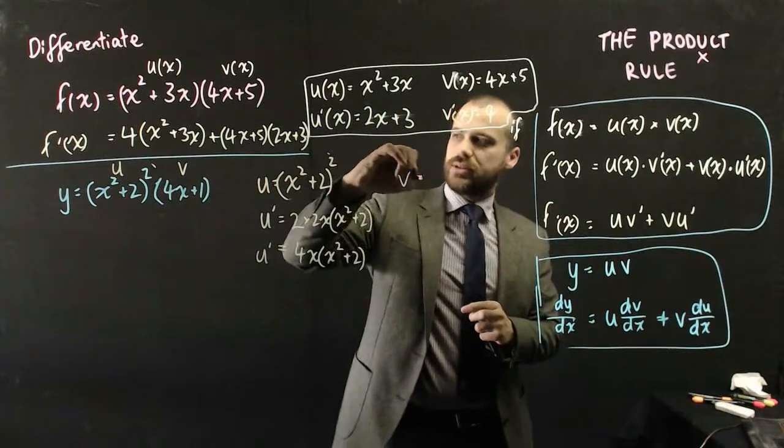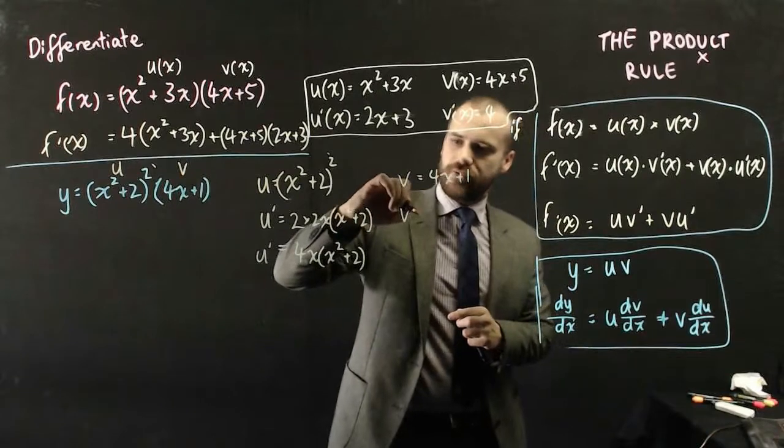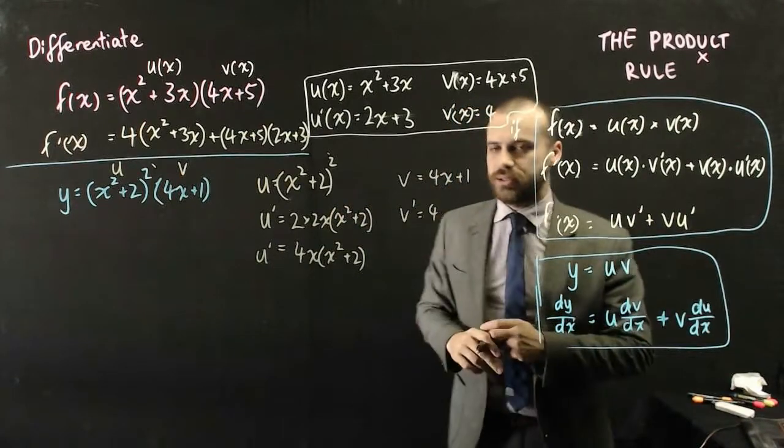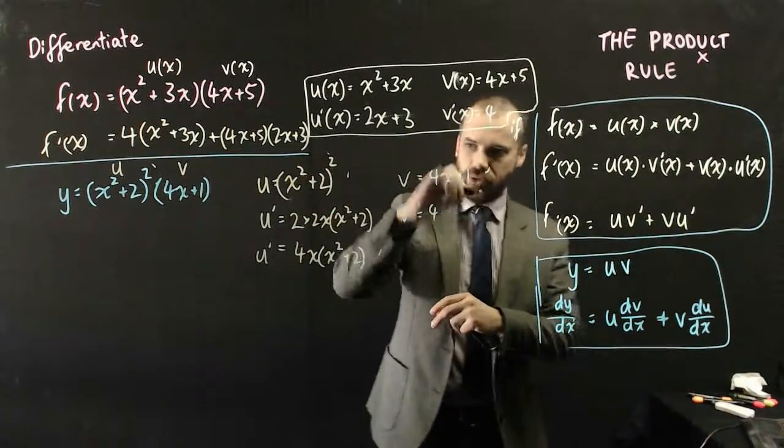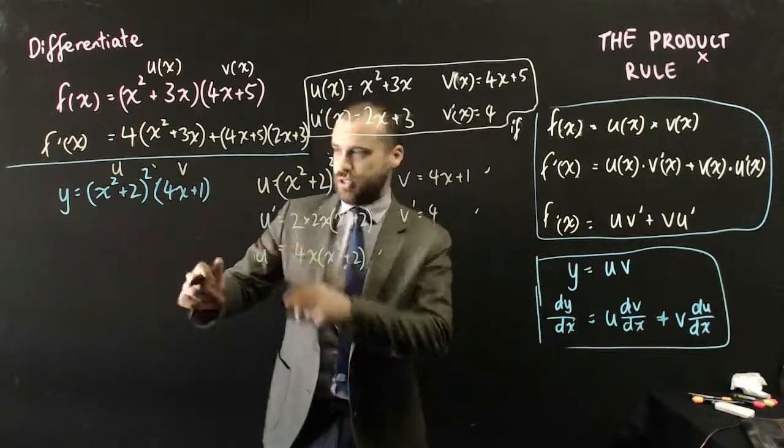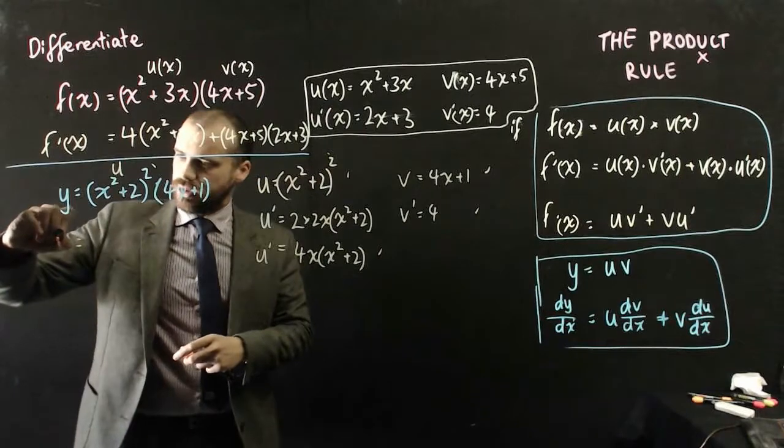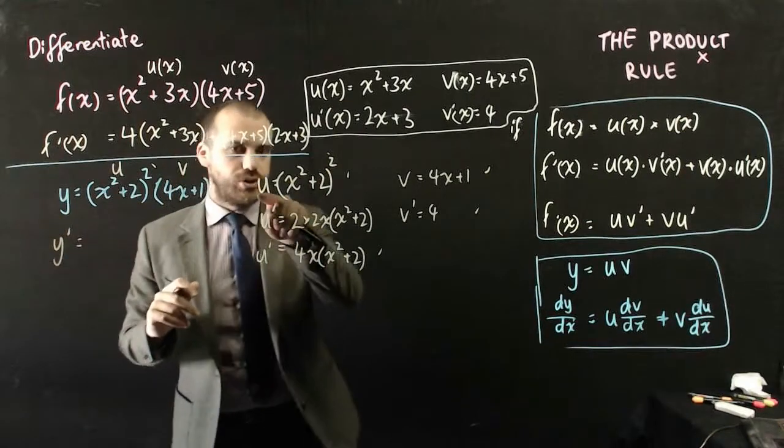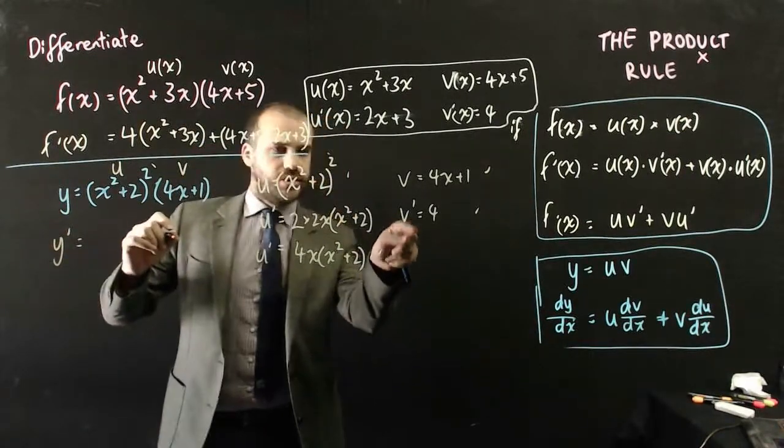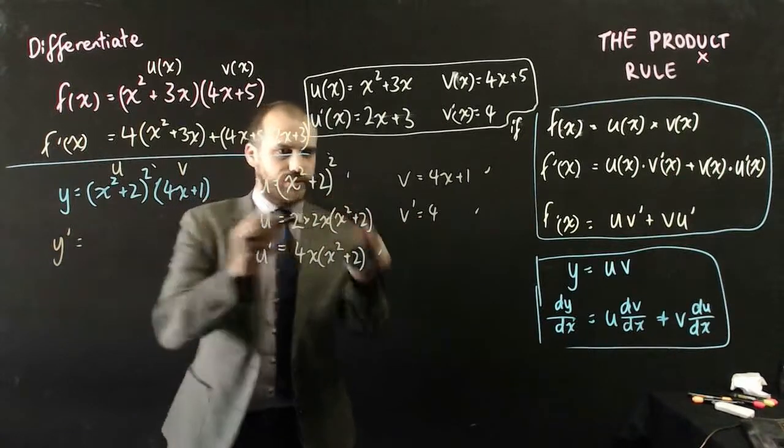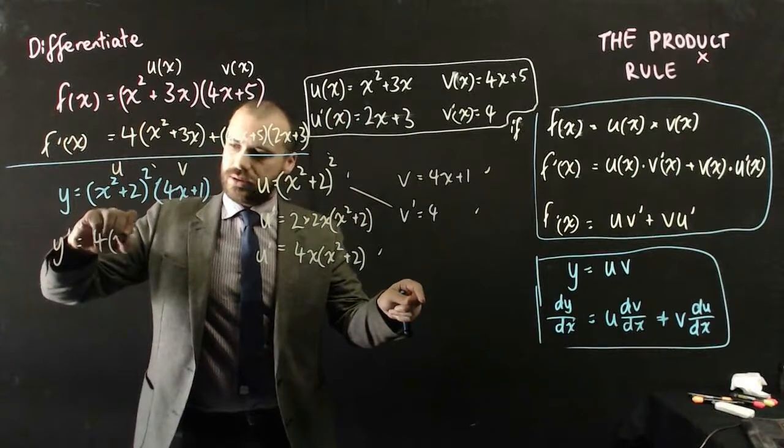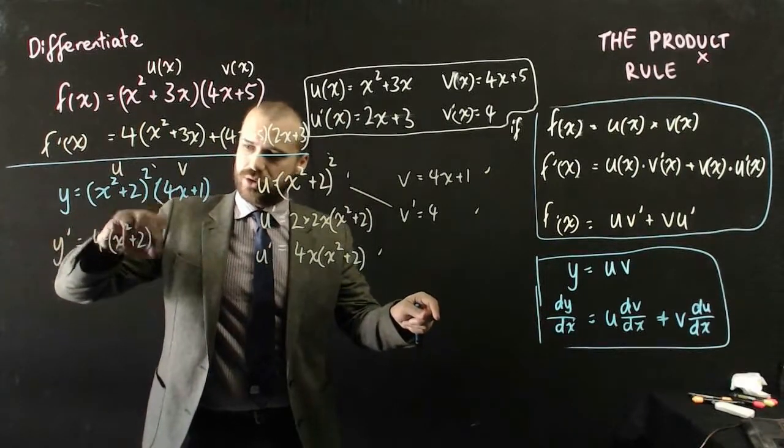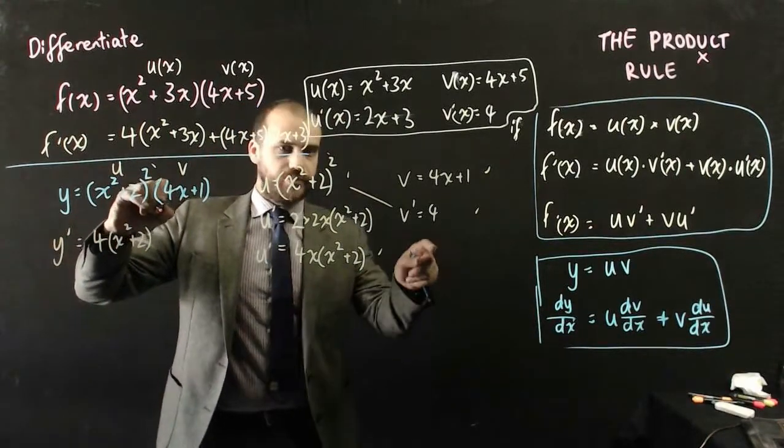Now v is 4x + 1, and v' is just 4. So now that I have those bits of information, 1, 2, 3, 4, I can use them to differentiate this. So y' is going to be equal to uv'. So I can multiply them together, multiply these together. So it's going to be 4 times (x² + 2)².